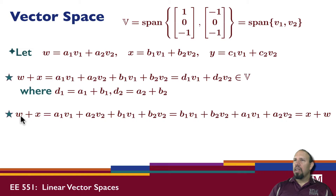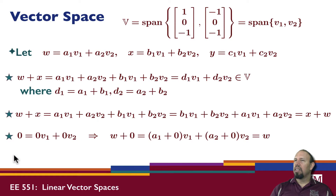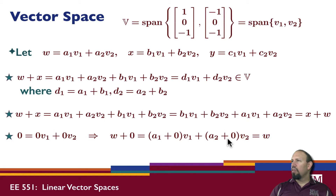Is W plus X commutative? Here's W and here's X. By the way the sum is defined, I move these terms over and I can see that in fact the two vectors commute. For the zero vector: 0 equals 0·V1 plus 0·V2, so W plus 0 gives D1 = A1+0 = A1 and D2 = A2+0 = A2, which gives back W. So W plus 0 equals W.